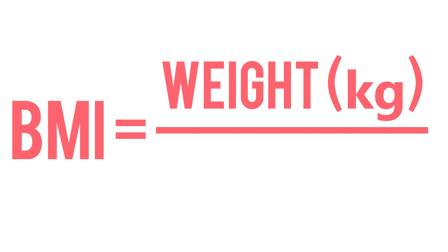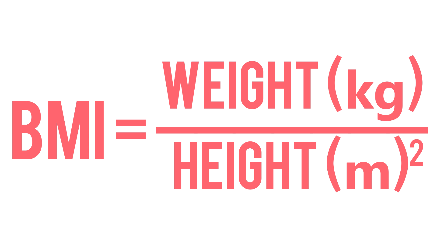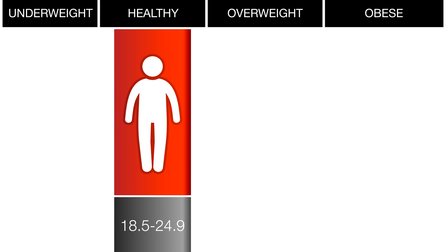I'm Dr. Lara. Body Mass Index, abbreviated as BMI, is used as an indicator for body fat. BMI is calculated by dividing your weight in kilograms by your height in meters squared to give you a value that determines your weight category. According to the CDC, a healthy weight BMI is 18.5 to 24.9, underweight is below 18.5.